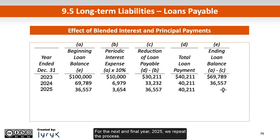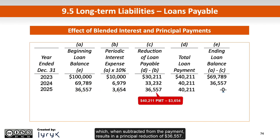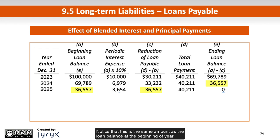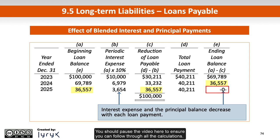For the next and final year, 2025, we repeat the process. The beginning loan balance is the 2024 ending loan balance of $36,557, which we multiply by the 10% interest rate to determine interest expense of $3,654, which, when subtracted from the payment, results in a principal reduction of $36,557. Notice that this is the same amount as the loan balance at the beginning of the year, resulting in an ending loan balance of zero — this shouldn't be a surprise because the loan is now paid. You should pause the video here to ensure you can follow through all the calculations.